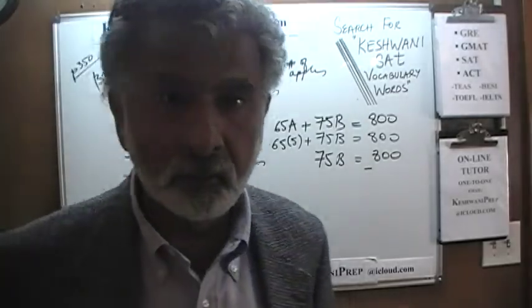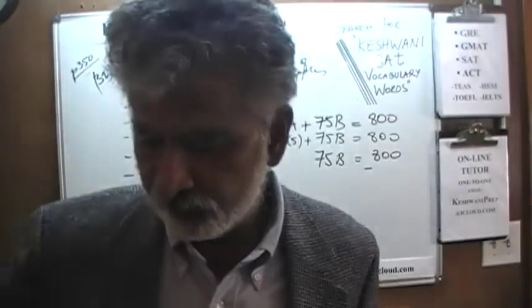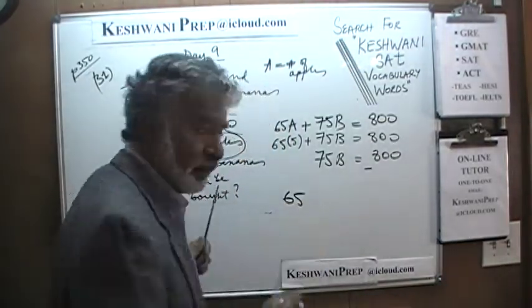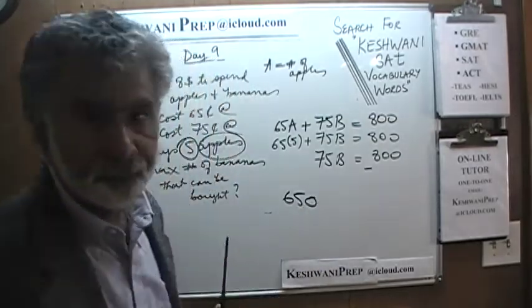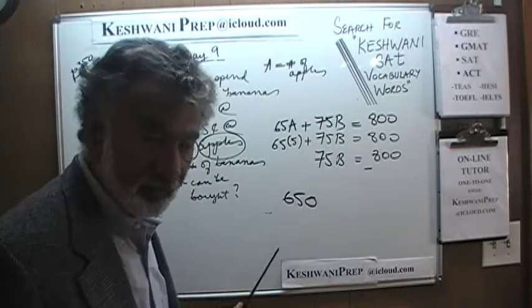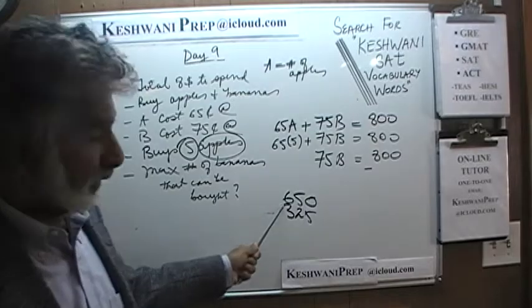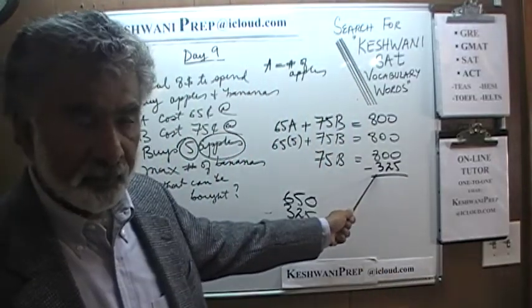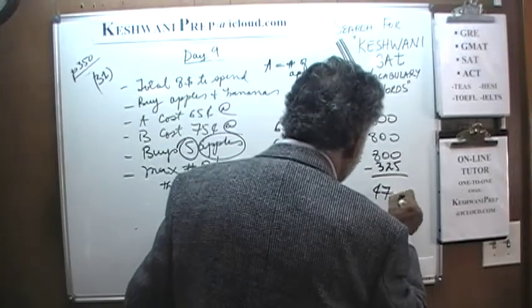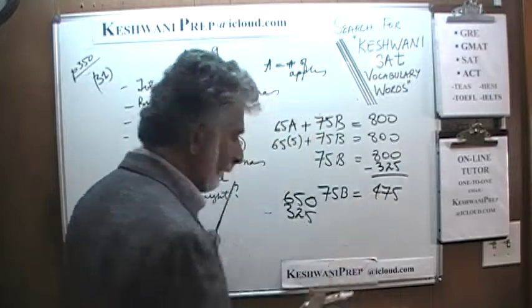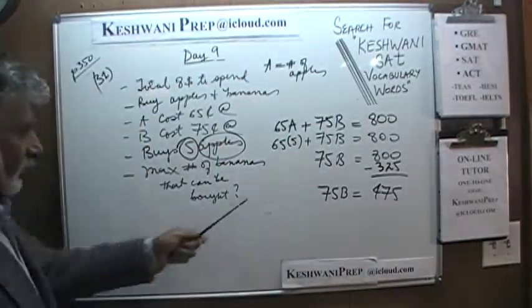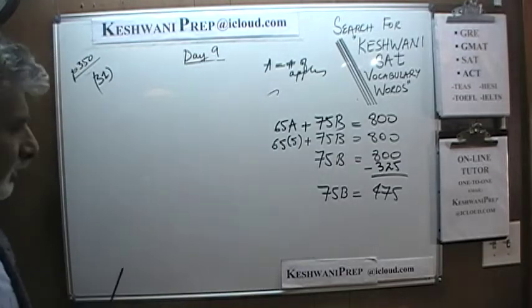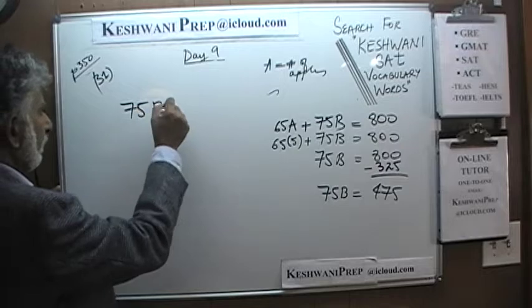Let's subtract 65 times 5 from both sides. 75B equals 800 minus 65 times 5. How much is 65 times 5? I know 65 times 10 is 650, so 65 times 5 is half of that — 325. 800 minus 325 is 475. So we end up with 75B equals 475.